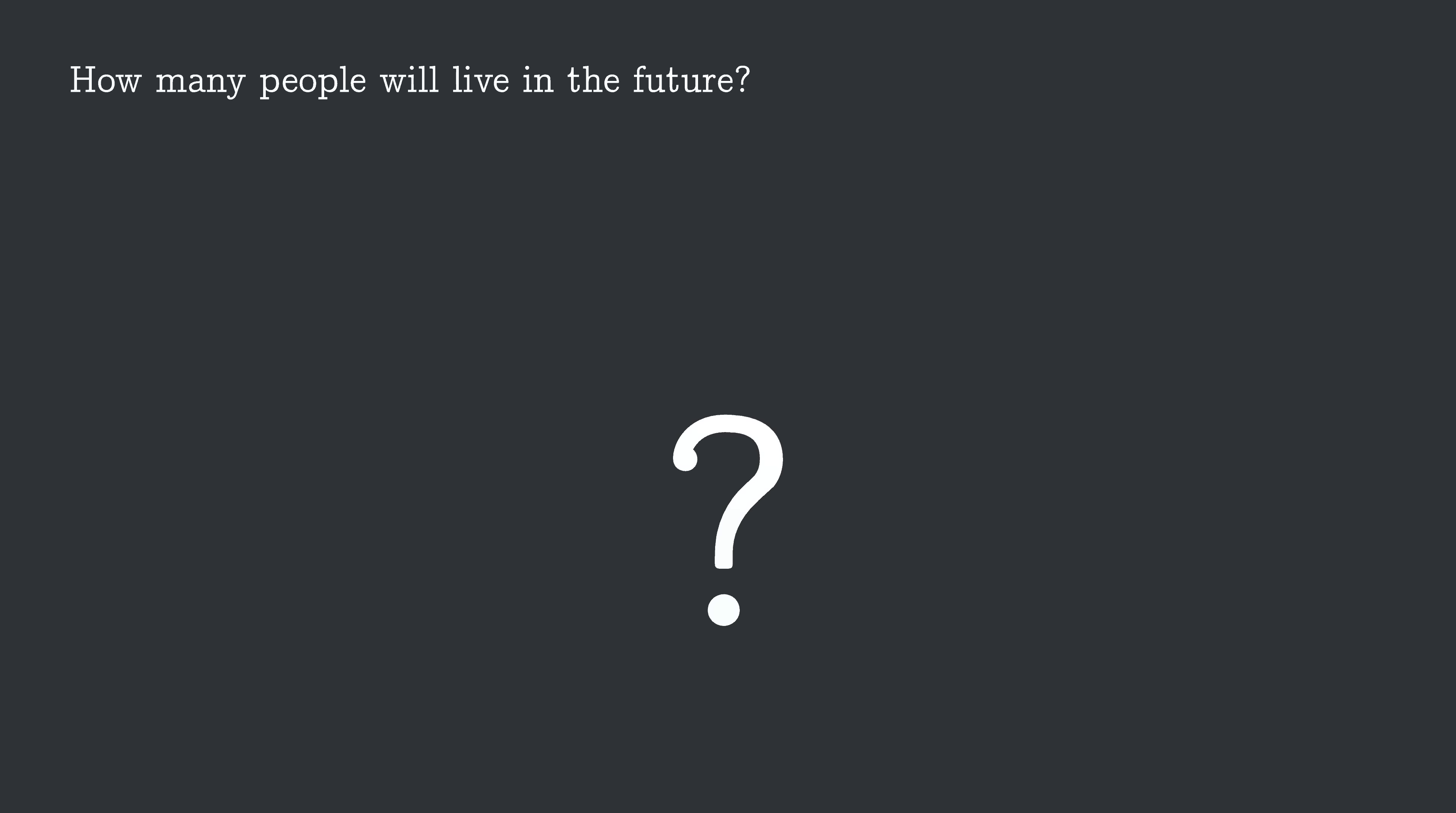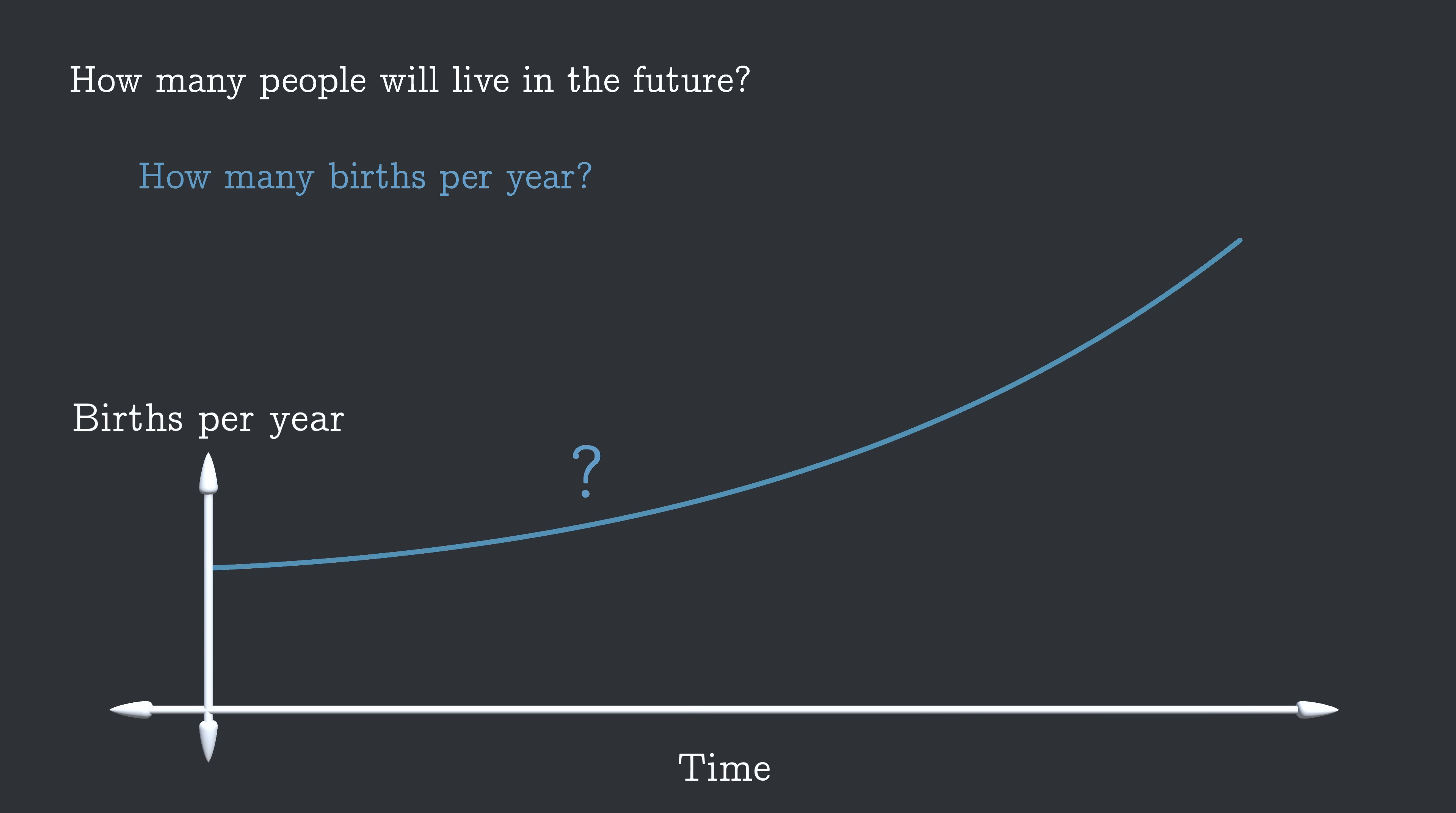All the years of the future will come one at a time. So one question is, how many people will be born each year in the future? This is kind of many questions, one per year, but we might be able to find a mathematical function to describe the overall pattern. And people will keep being born until humanity eventually goes extinct. So a second question is, how long will humanity last?